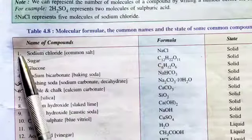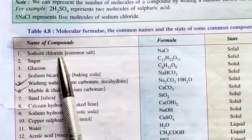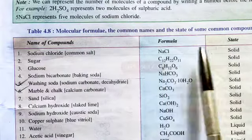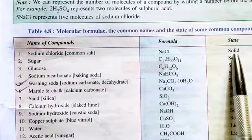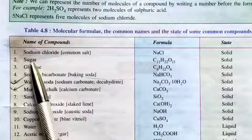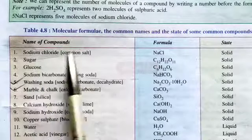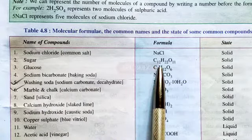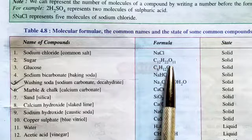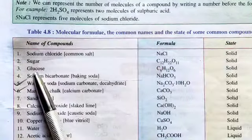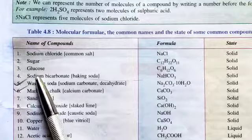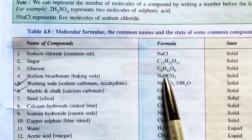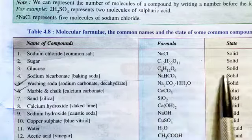1. Sodium chloride, which is also called common salt — its formula is NaCl and its state is solid. 2. Sugar — its formula is C12H22O11 and its state is solid. 3. Glucose — its formula is C6H12O6 and its state is solid.